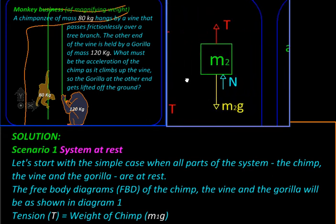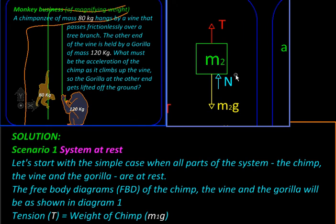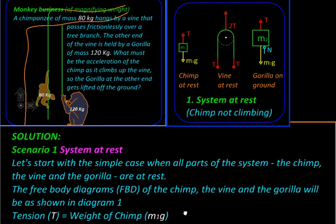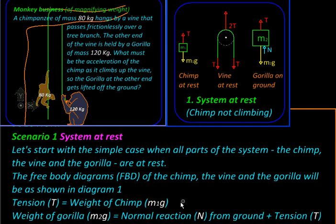And finally the free body diagram of the gorilla. Here the tension in the vine will be acting on the gorilla in the upward direction. It will not be enough to balance its weight m2g, so the gorilla will be partially supported by the ground. We can write: the weight of the gorilla m2g will be balanced by normal reaction N from the ground and the tension T.